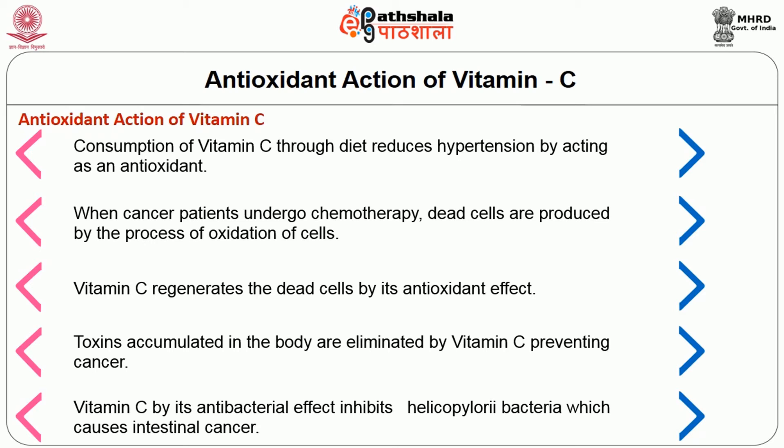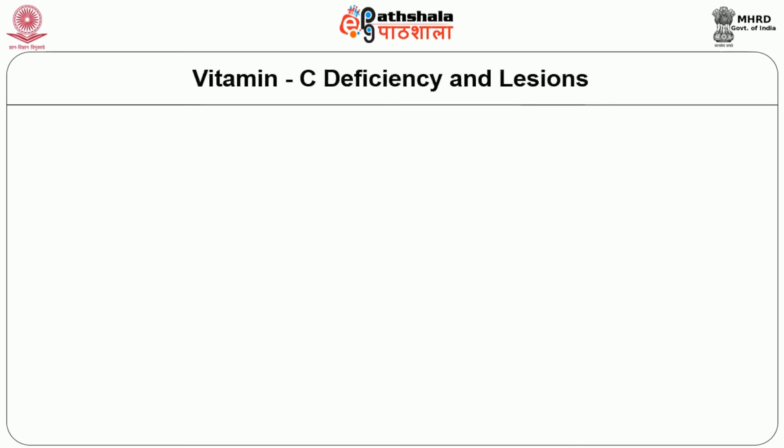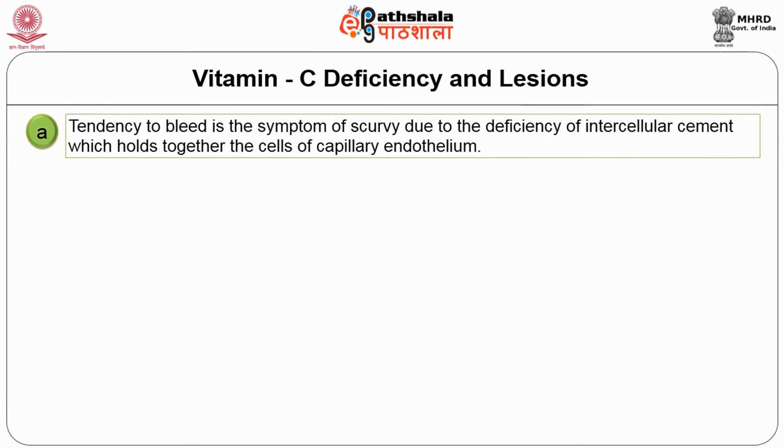Toxins accumulated in the body are eliminated by vitamin C, preventing cancer. Vitamin C, by its antibacterial effect, inhibits Helicobacter pylori bacteria which causes intestinal cancer. The clinical manifestations of vitamin C deficiency — scurvy — are most commonly present at two peak ages: in early childhood and the very aged. In early childhood, a tendency to bleed is the symptom of scurvy, due to deficiency of intercellular cement which holds together the cells of capillary endothelium.